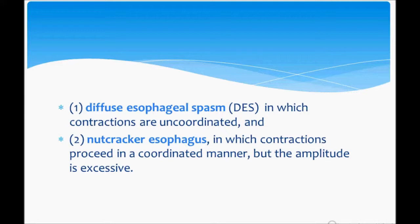In diffuse esophageal spasm, the contractions are uncoordinated. In nutcracker esophagus, the contractions proceed in a coordinated manner but the amplitude is excessive. This is the key difference between these two.